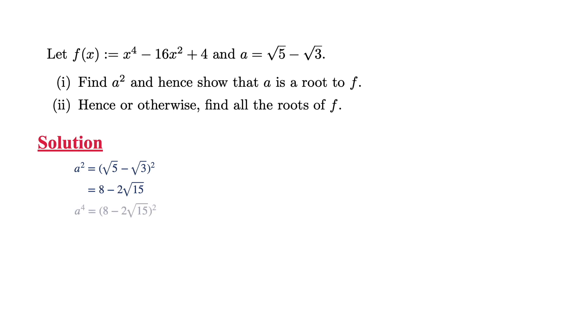From a squared, we can figure out a to the power of 4, which is 124 minus 32 square root 15.